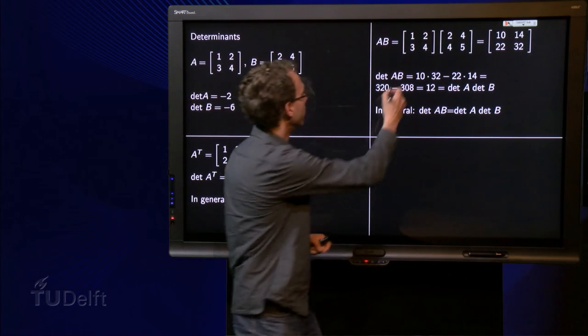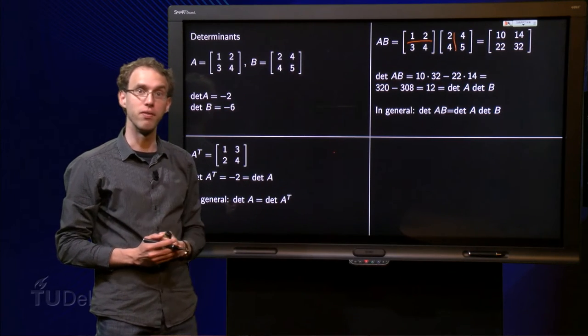Now we are going to look into products. We compute the matrix A times B. So use the row column rule. 2 plus 8 equals 10, 6 plus 16 equals 22, 4 plus 10 equals 14, and 12 plus 20 equals 32. So there we have our matrix AB.